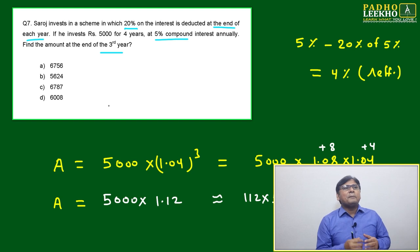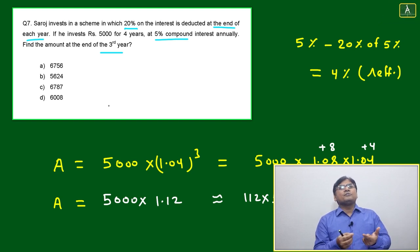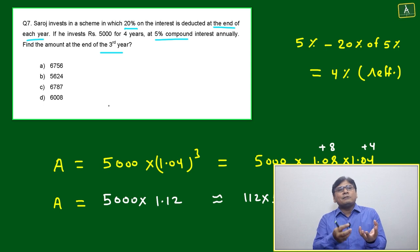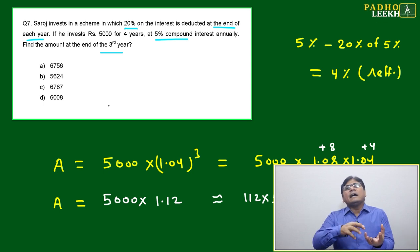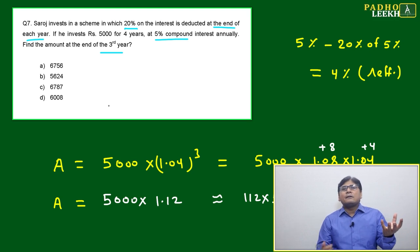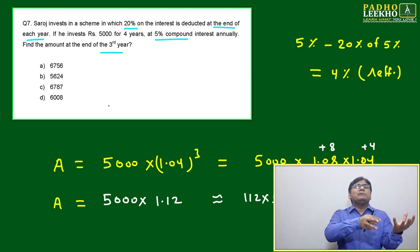After every year, after completion of one year, 20% of whatever interest will be received, that will be deducted in the form of tax. Means 5% interest, and 20% of 5% will be deducted.